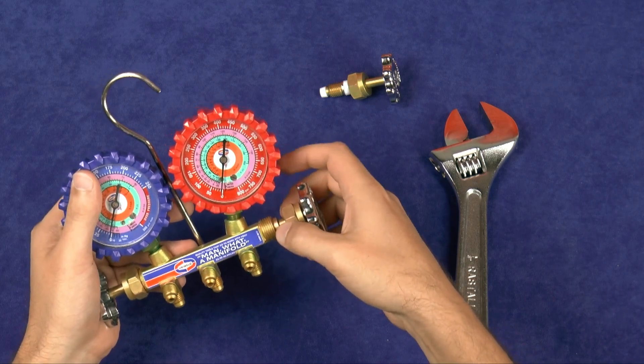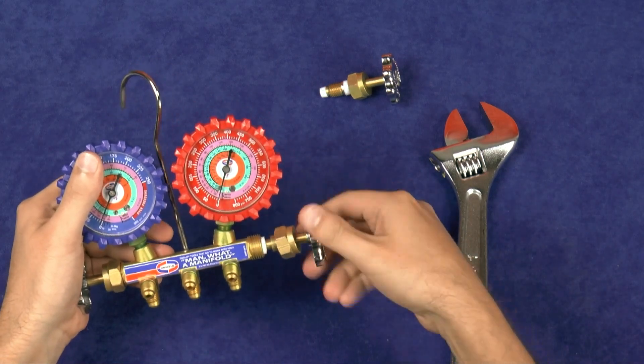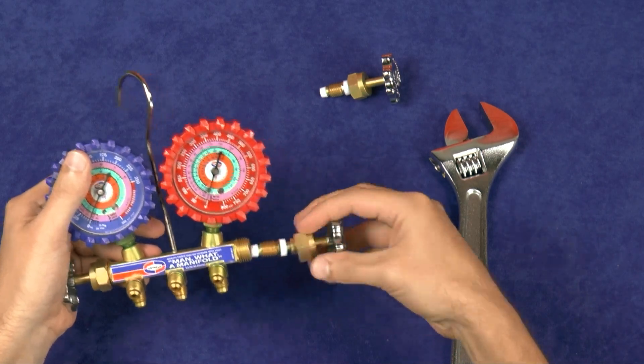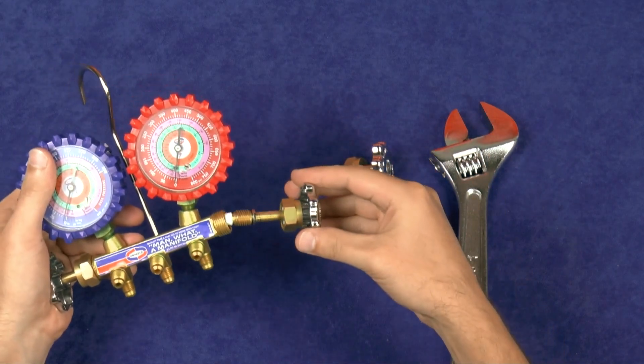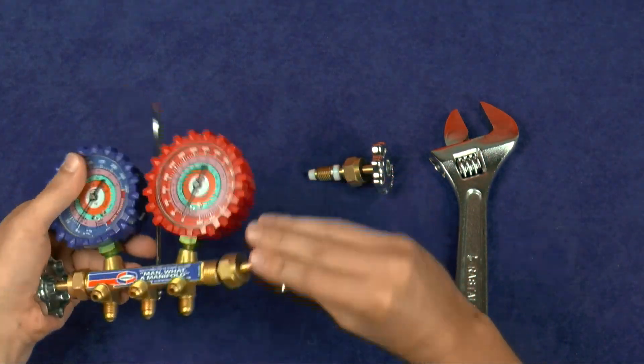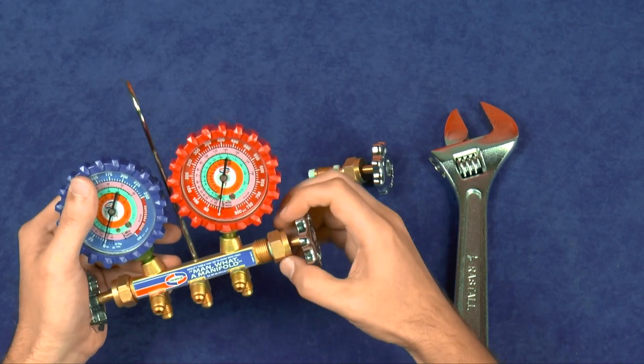unscrew the brass packing nut and remove the valve stem assembly from the manifold body by turning the metal hand wheel counterclockwise. Screw the new valve assembly onto the manifold body by turning the metal hand wheel clockwise and tighten the brass packing nut on the manifold body for a complete seal.